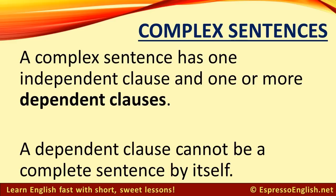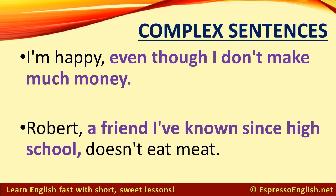Let's look at a complex sentence. A complex sentence has one independent clause and one or more dependent clauses. A dependent clause cannot be a complete sentence by itself. Here are some examples. The dependent clause is shown in purple.